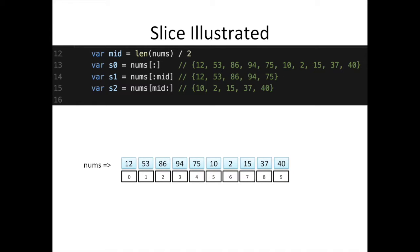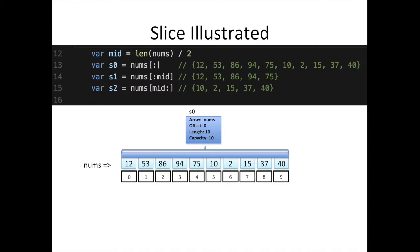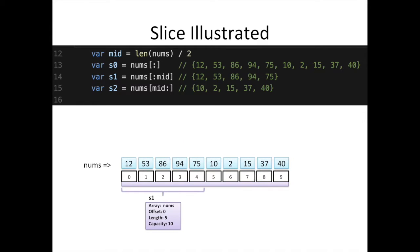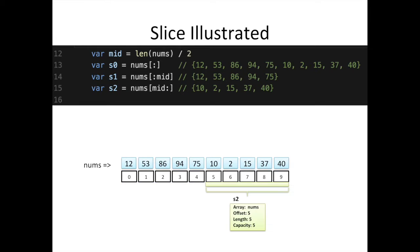We can revisit our previous slices. Slice 0 covers the entire array, so its length and capacity are the same. Slice 1 has length 5, but its capacity is 10 — the full length of the array — because its starting offset is at position 0 of the underlying array. And this makes sense why slice 2 has a capacity of 5: its offset starts from position 5 and continues to the end of the array.